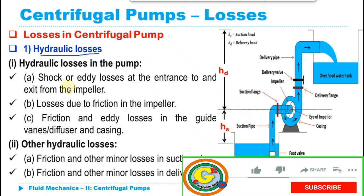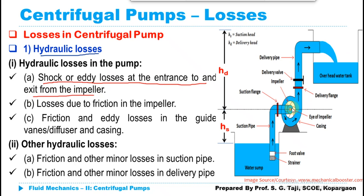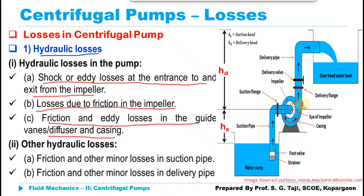In hydraulic losses, there are losses like shock or eddy losses at the entrance and at the exit from the impeller. Whatever losses take place at the entrance and exit of the impeller due to shocks or eddy formation, plus losses due to friction in the impeller — since no material is ideally smooth, there will be a certain amount of friction losses as water moves through the impeller or glides over the blades. Again, there are friction and eddy losses in the guide vanes or diffuser and casing, as water moving through the casing also incurs losses due to friction and eddy formation.